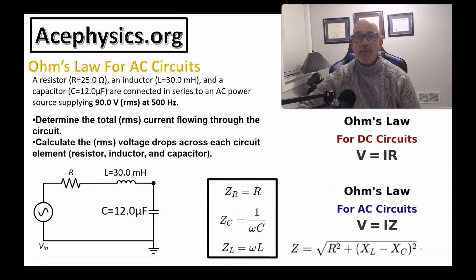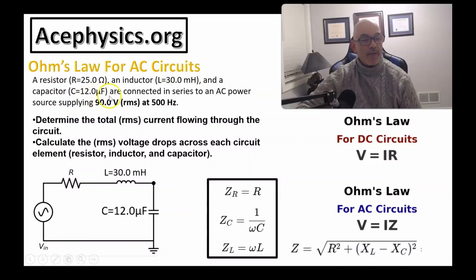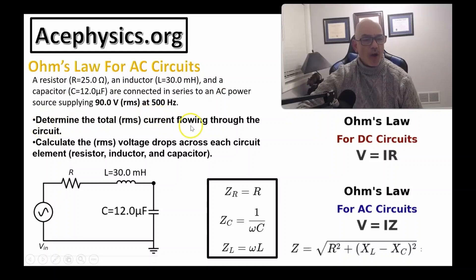Now let's move on to problem number two, titled 'Ohm's Law for AC Circuits.' A 25-ohm resistor, a 30-millihenry inductor, and a 12-microfarad capacitor are connected in series to an AC power source supplying 90 volts RMS at 500 hertz. Part A: determine the total RMS current flowing through the circuit. Part B: calculate the RMS voltage drops across each circuit element — the resistor, the inductor, and the capacitor.